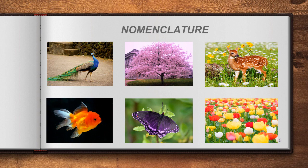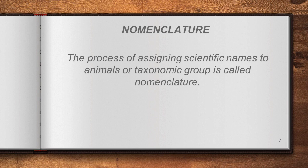The definition of nomenclature is: the process of assigning scientific names for animals or a taxonomic group is called nomenclature. We are assigning or giving a scientific name to one animal or one taxonomic group.